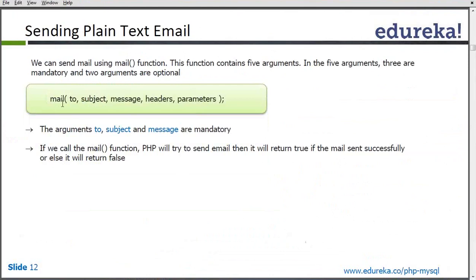Here is a PHP function. PHP uses the mail() function to send emails, and this function accepts five parameters. This is a built-in PHP function where 'to', 'subject', and 'message' are mandatory, but 'headers' and the fifth 'parameters' argument can be optional.